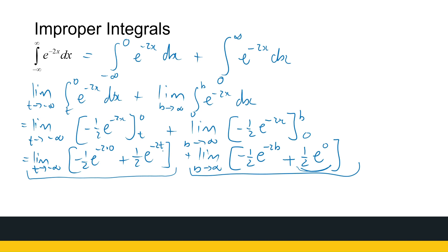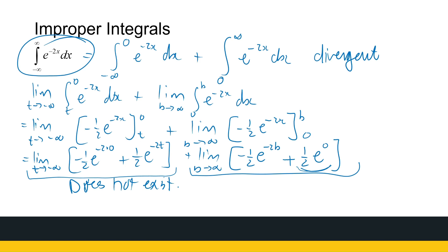Looking at the right-hand limit first: as b goes to infinity, e to the power minus 2b tends to 0, so that part gives a value of a half. But for the left-hand part, as t goes to minus infinity, we get a minus times a minus giving a positive, very large exponent — so e to the power minus 2t goes to infinity. This portion does not exist, so the limit cannot be found. Since we cannot calculate both limits, the whole integral is divergent.